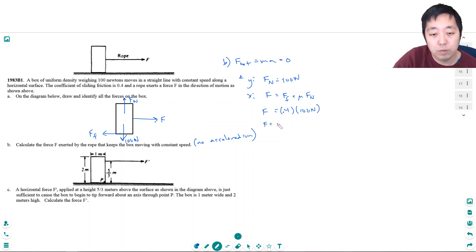So therefore F is equal to that, so F equals 40. Okay, so that's a pretty straightforward free body diagram problem, linear acceleration. Now a horizontal force F prime is applied at a height five-thirds meter above the surface as shown in the diagram above, just sufficient to cause the box to begin to tip forward about the axis through point P.